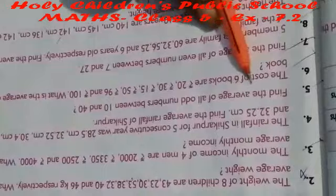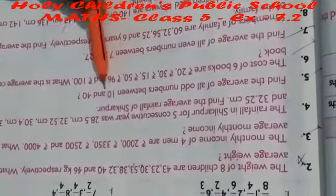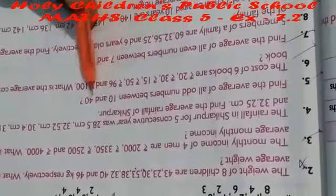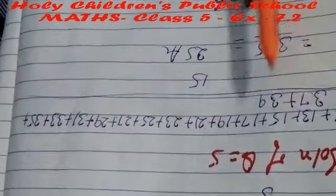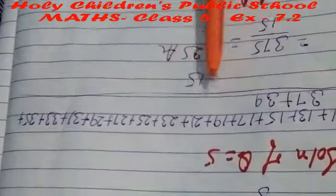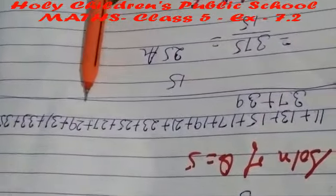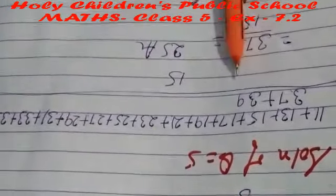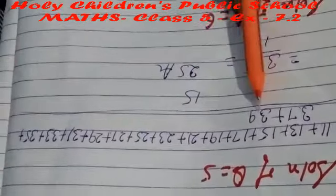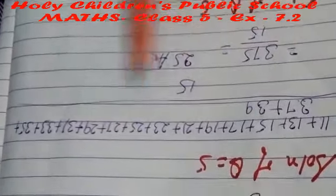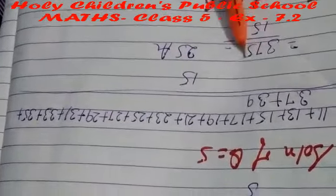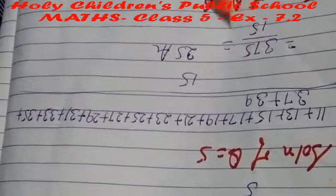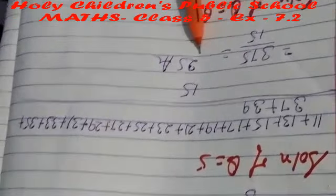Question number 5: find the average of all odd numbers between 10 and 40. First we write all the odd numbers between 10 and 40. There are 15 odd numbers. The sum of all odd numbers is 375, divided by 15. When we divide these two numbers, the average comes to 25.